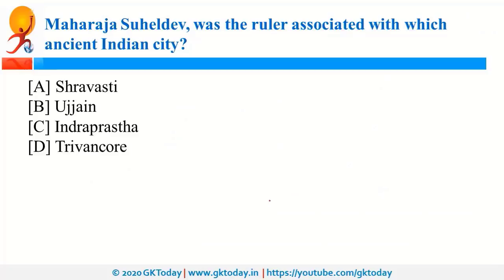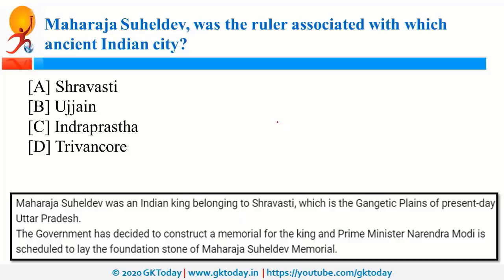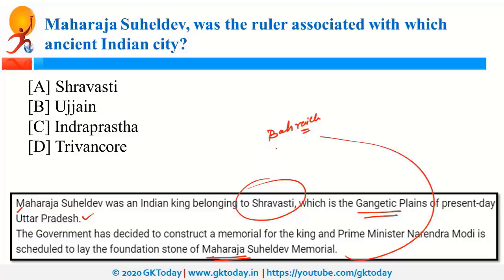Maharaja Suhaldev was a ruler associated with the ancient Indian city of Shravasti, located in the Gangetic Plains, presently in Uttar Pradesh. The Prime Minister laid the foundation stone of a memorial for Maharaja Suhaldev, which is to be built in Bahraich, Uttar Pradesh. Recently, UP also introduced a system of 16-digit unicodes for land holdings in the state.